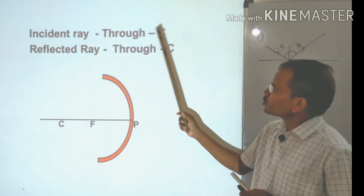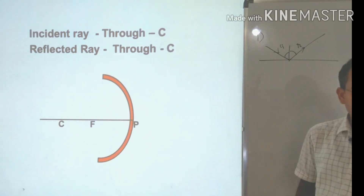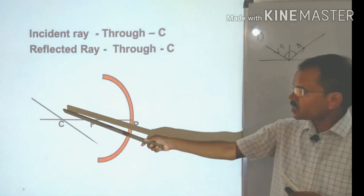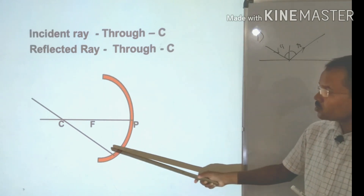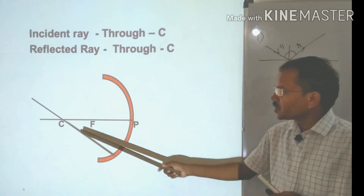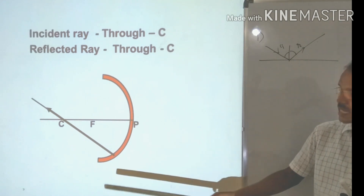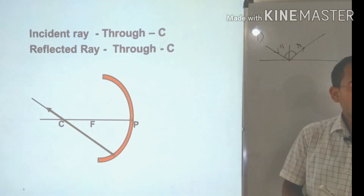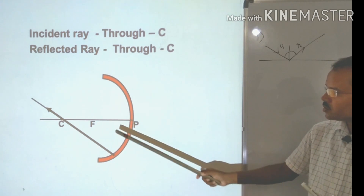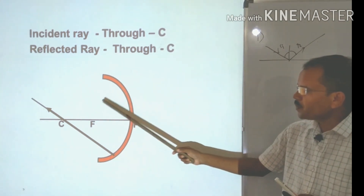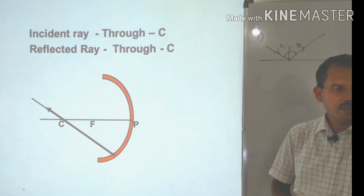Third characteristic: if the incident ray passes through the center of curvature C, then after reflection the path of the reflected ray will be the same — it reflects back along the same path it came from the C point.